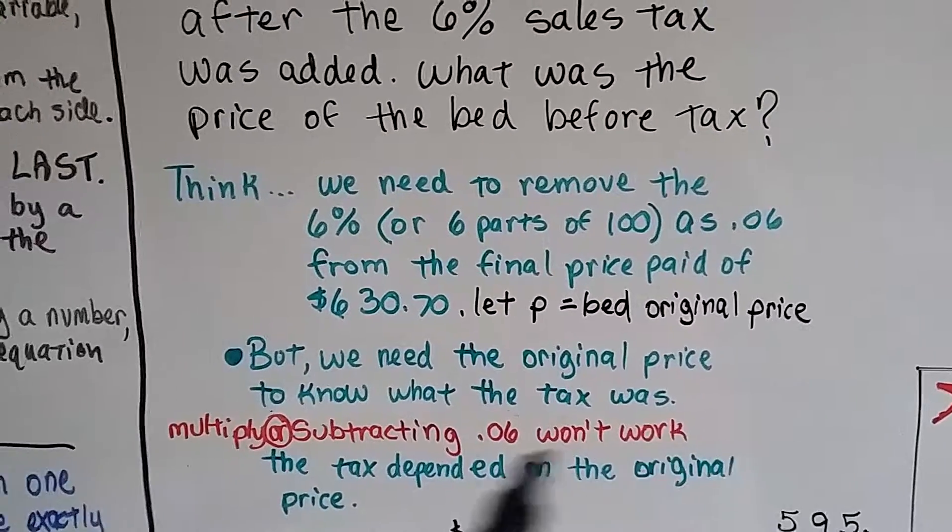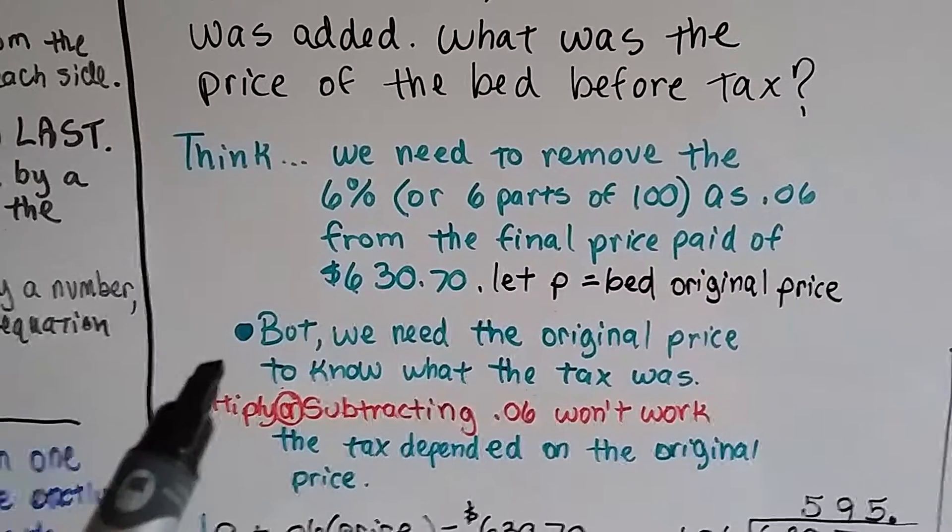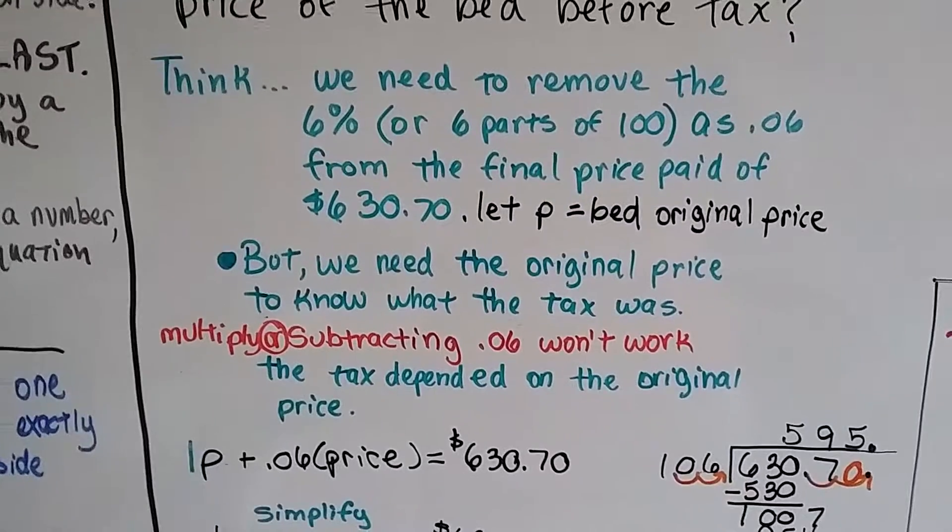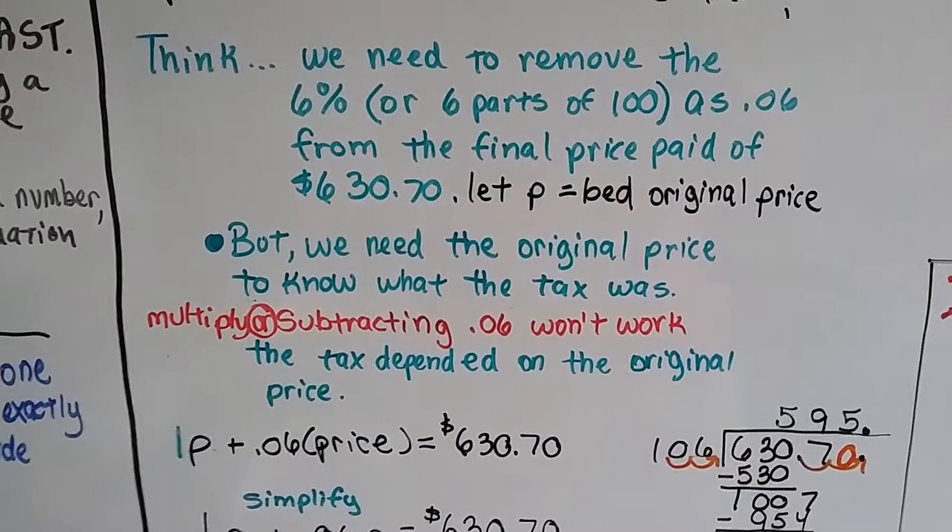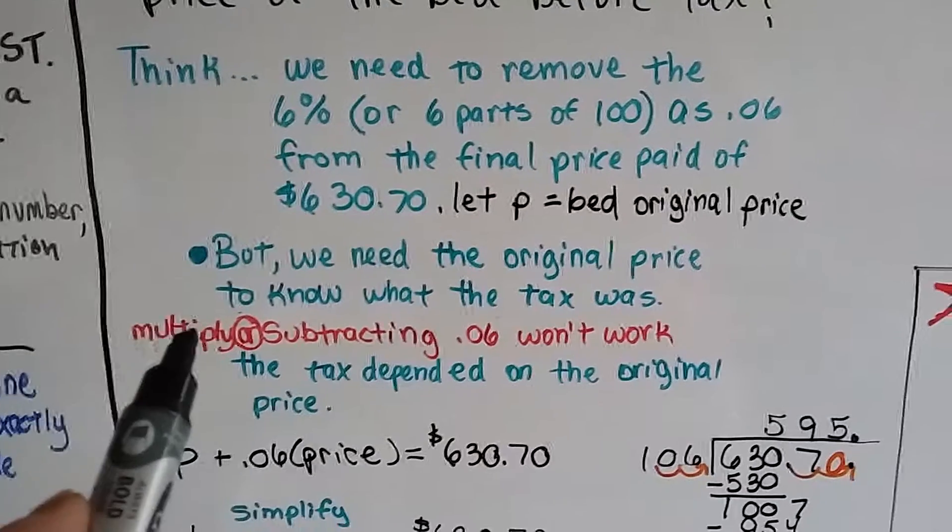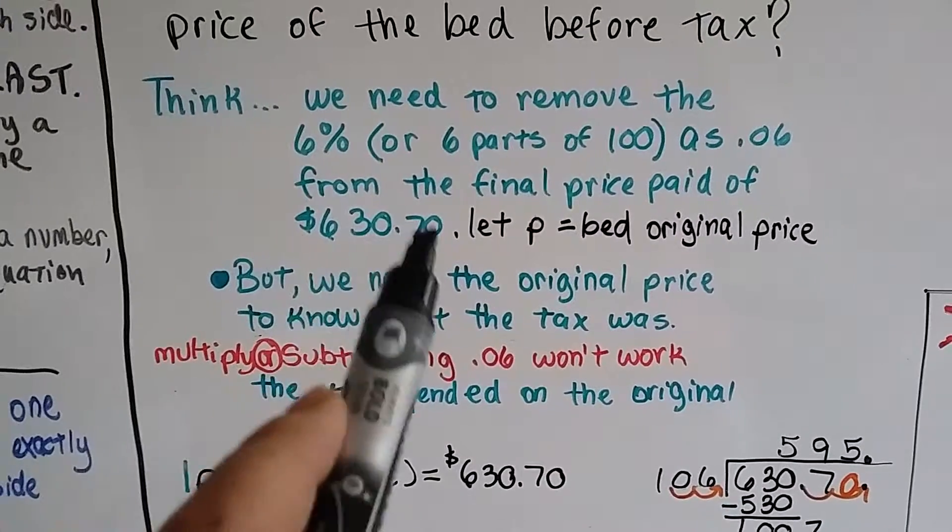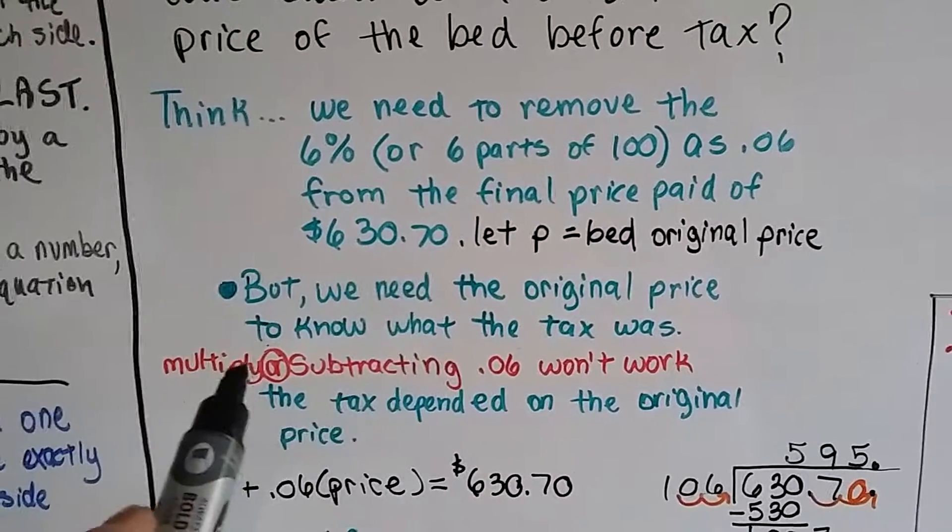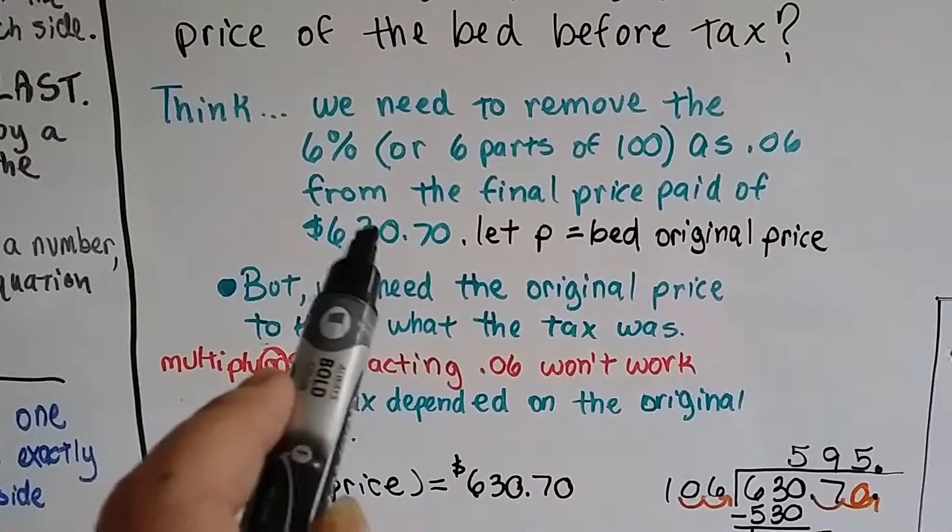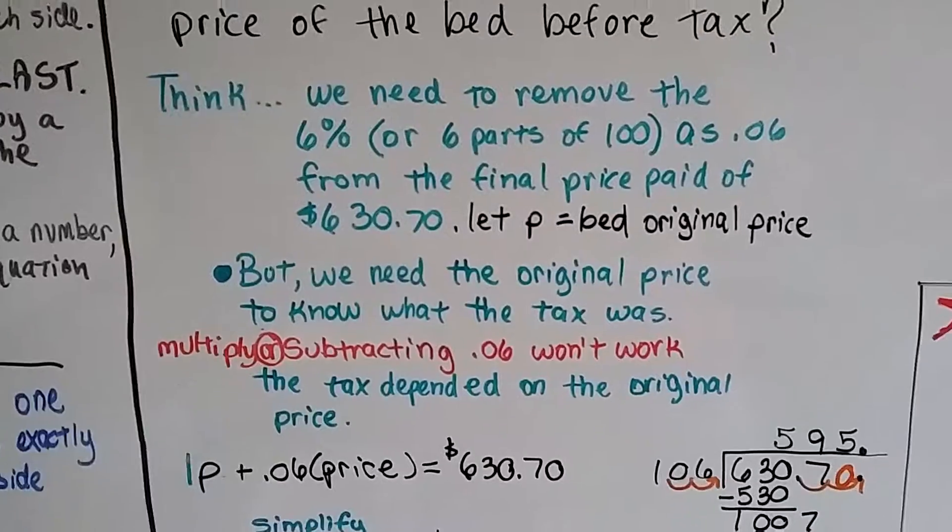Think price tag. But we need the original price to know what the tax was. The tax depended on the original price. Now, we can't just multiply this by the tax and then subtract whatever the amount from the multiplication. We can't do that. That won't work.